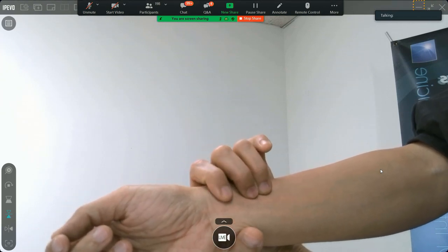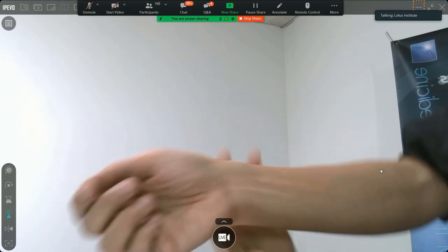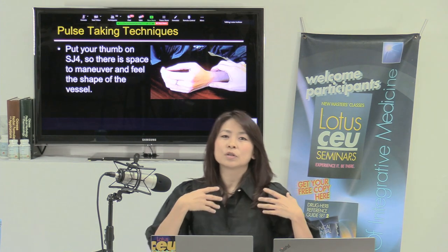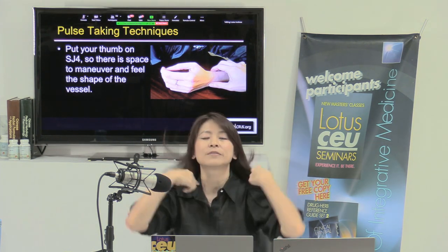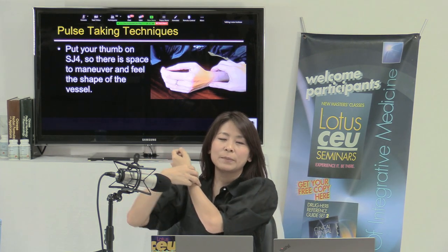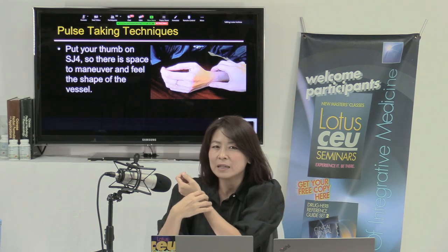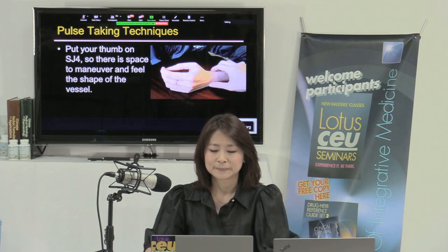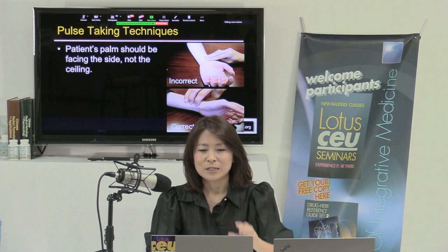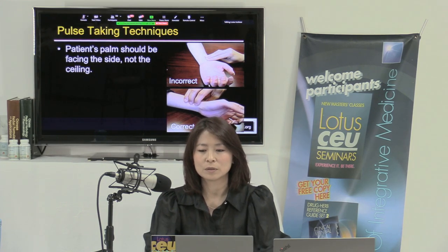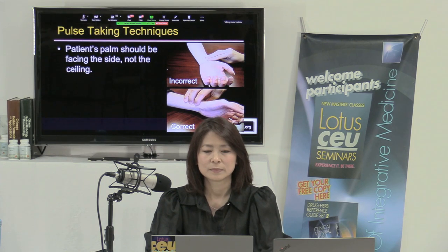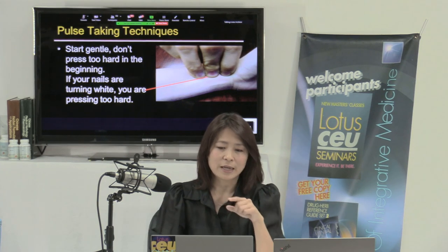When taking the pulse, put your thumb on San Jiao 4 so there's space to maneuver — you should be able to fit an egg in that space. This allows you to use your fingertip, the bed of the nail, or move your fingers around freely to feel the entire vessel. Also adjust finger spacing based on the patient's size: spread fingers wider for a tall patient, closer together for a smaller patient.